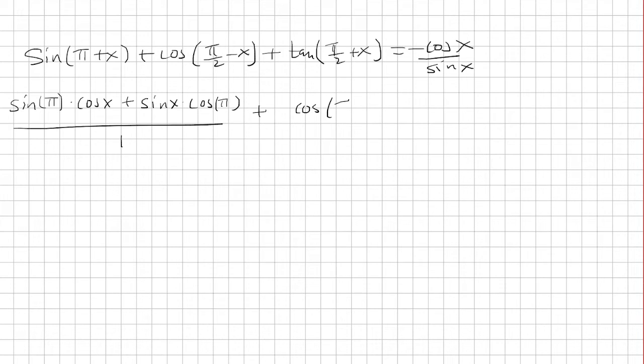The second term is just cosine pi over 2 times cosine x, plus sine pi over 2 times sine x. So this is the second term.